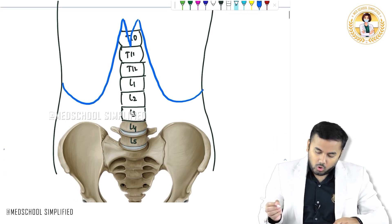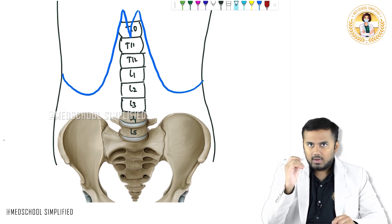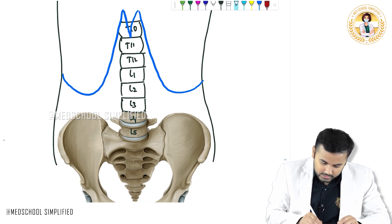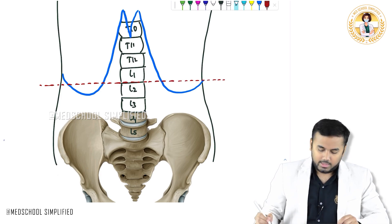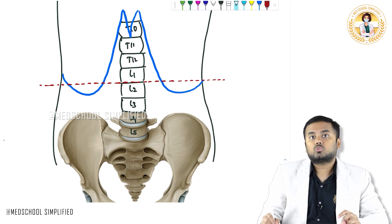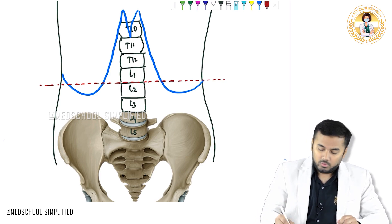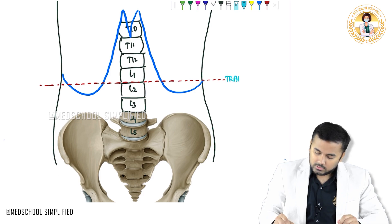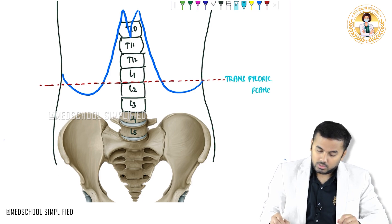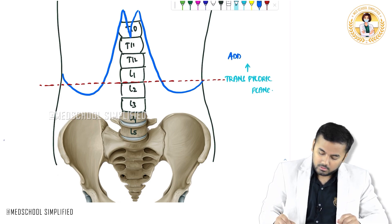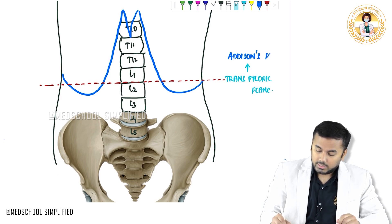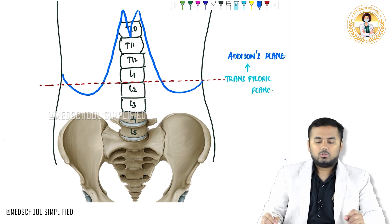Now let me draw one very important line just below L1 and above L2 — exactly here. I am drawing a line exactly below L1 and above L2. This line is called the transpyloric plane. What is this? This is called the transpyloric plane. What is the other name for the transpyloric plane? Edison's plane. So the transpyloric plane is also called Edison's plane.